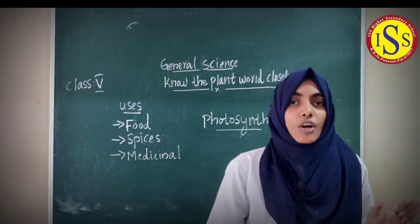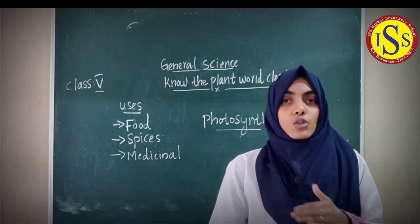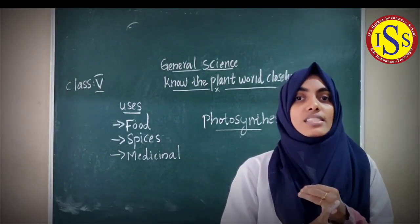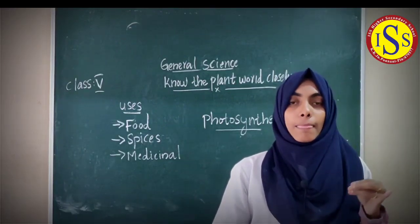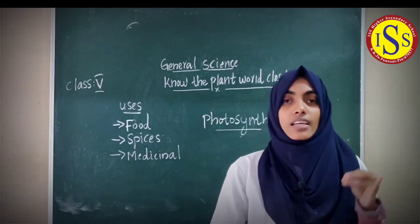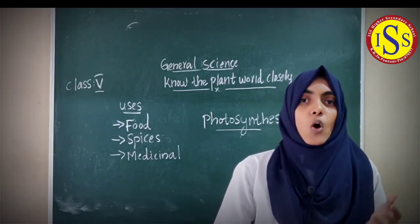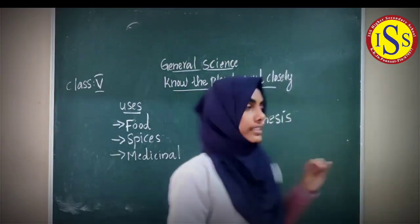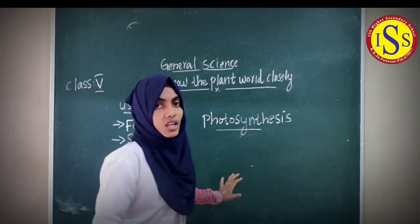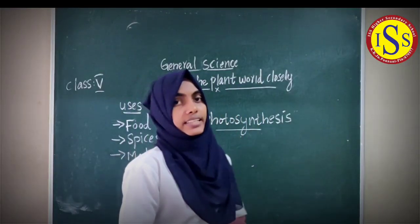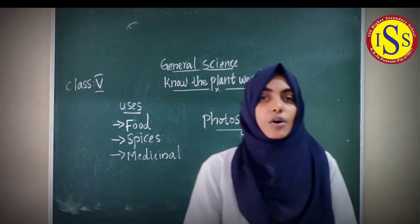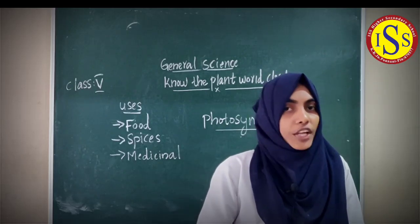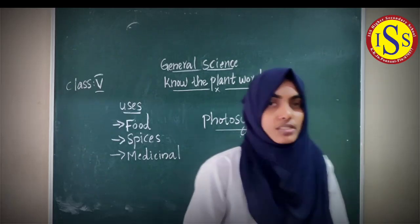By the product of photosynthesis, we get glucose and oxygen. Glucose and oxygen are the products of photosynthesis.